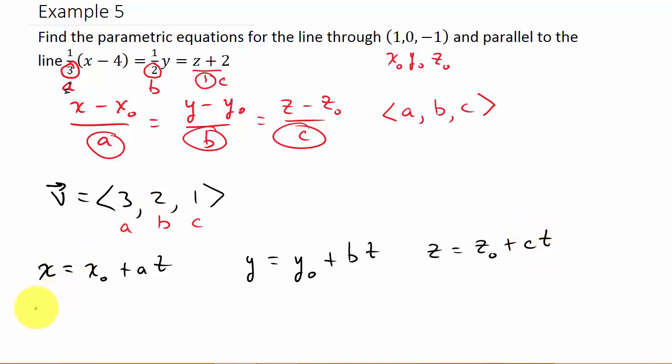All right, so x is equal to x naught, which is 1, plus a, which is 3 t. And then y is equal to y naught, which is 0, plus b, which is 2 t. So y is 2 t.